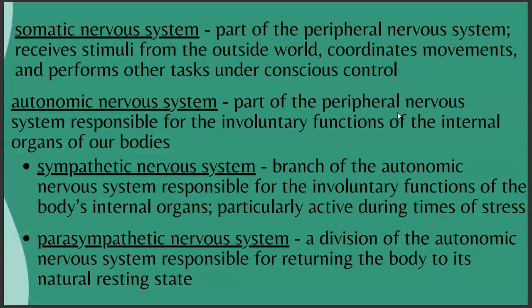The peripheral nervous system breaks into two more branches: somatic and autonomic. The somatic nervous system receives stimuli from the outside world, coordinates movements, and performs tasks under conscious control. The autonomic nervous system is responsible for involuntary functions of internal organs — the somatic is what we control consciously; the autonomic handles everything the body does automatically without us thinking about it.